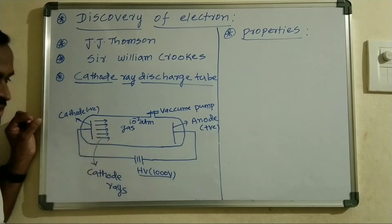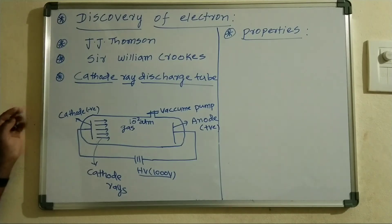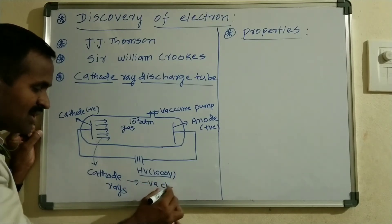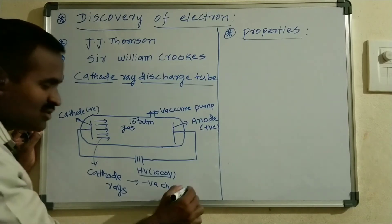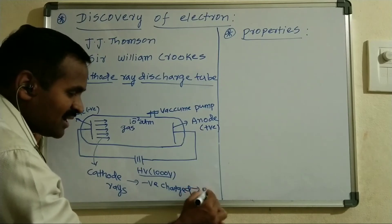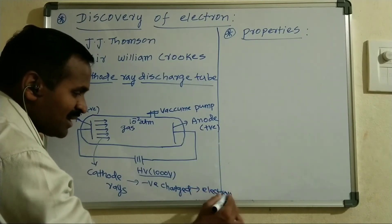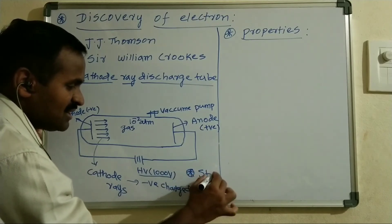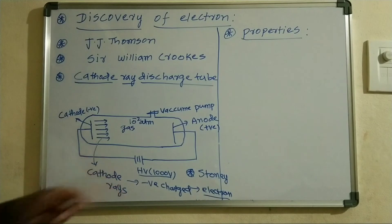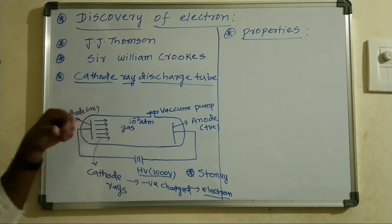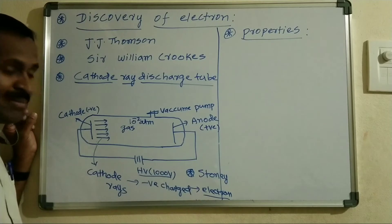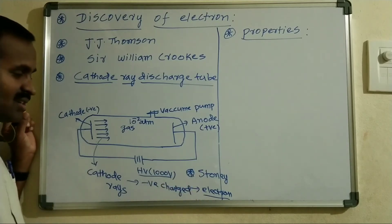These stream of particles are called cathode rays. Cathode rays consist of negatively charged particles. These negatively charged particles are named as electrons. The naming of electron was given by an Austrian scientist, and the discovery was done by J.J. Thompson from the cathode ray discharge tube experiment.